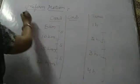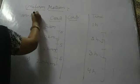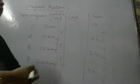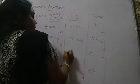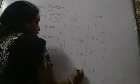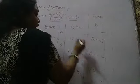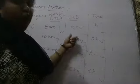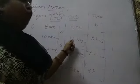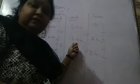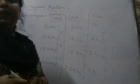Now, non-uniform motion. For example, car B first travels 5 km, then 12 km, then 15 km, then 20 km. The differences between these are 7, 3, and 5 — they are not equal. So car B is not travelling equal distances in equal intervals of time. Such motion is called non-uniform motion. If any object travels unequal distances in equal intervals of time, then it is said to be in non-uniform motion.